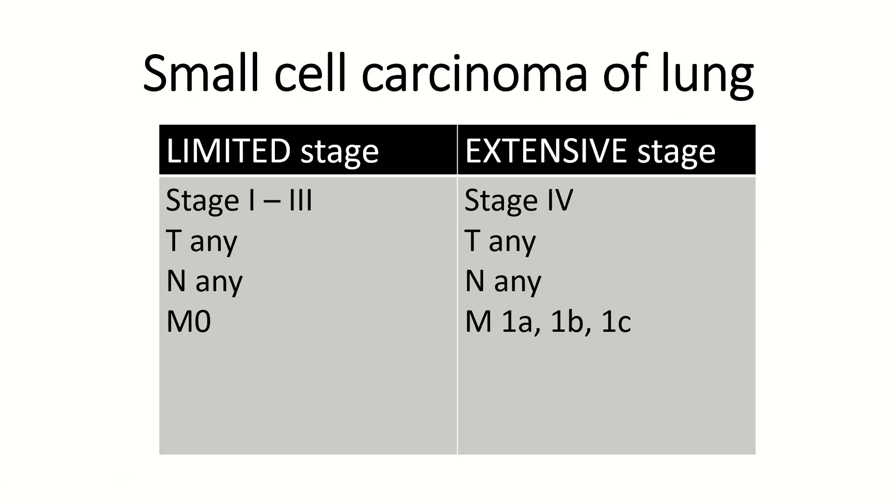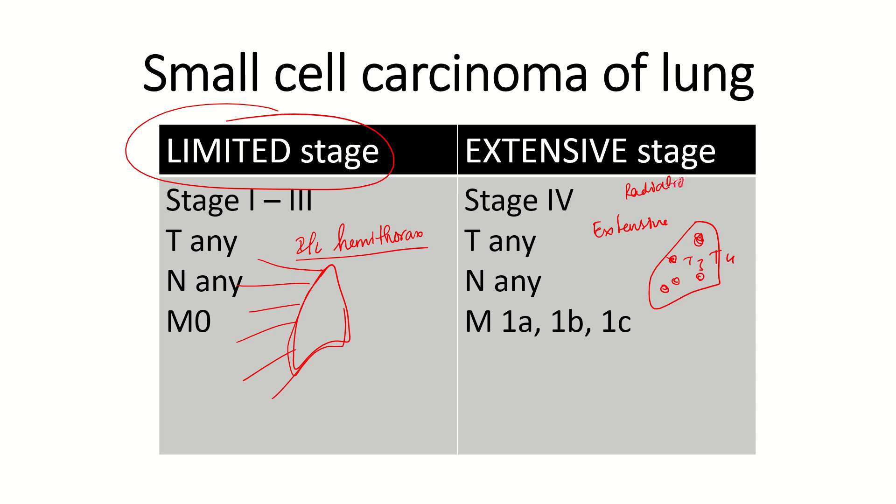Small cell carcinoma of the lung has a different staging system. It is same as TNM, but however it is again divided into limited stage and extensive stage. Limited stage is involvement of ipsilateral hemithorax. If contralateral hemithorax is involved, or if there is extensive involvement of single lung, that is T3 and T4 with multiple nodules, is also considered extensive stage. Why is it called limited stage? Because it can be included in single radiation field. But if it is present on the contralateral side, we cannot give both sides together during radiation. So it is considered as extensive stage.